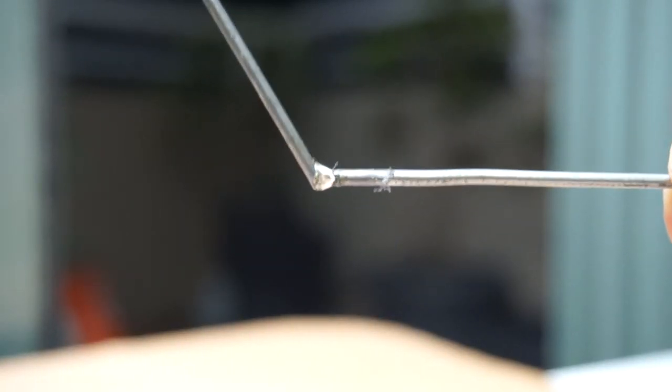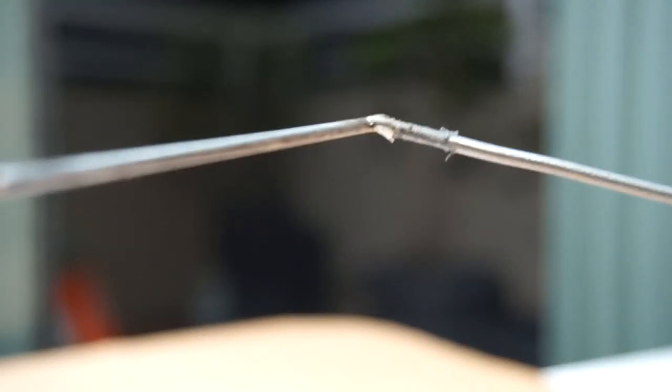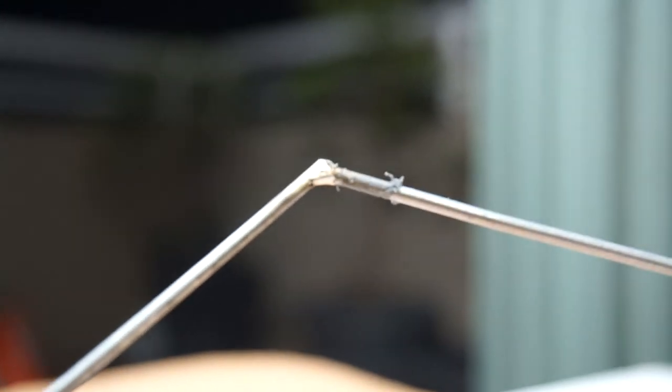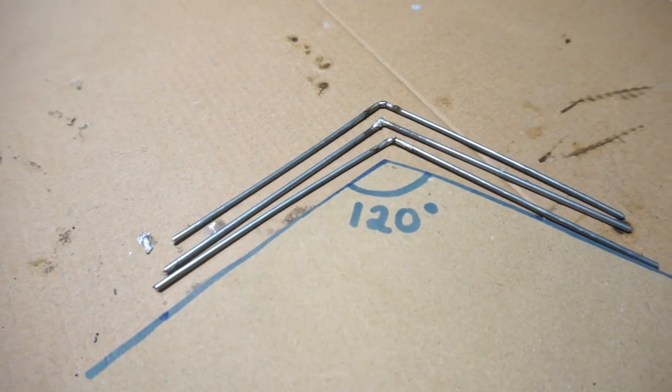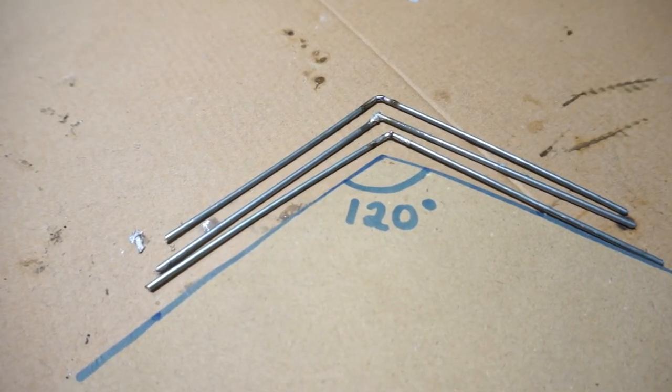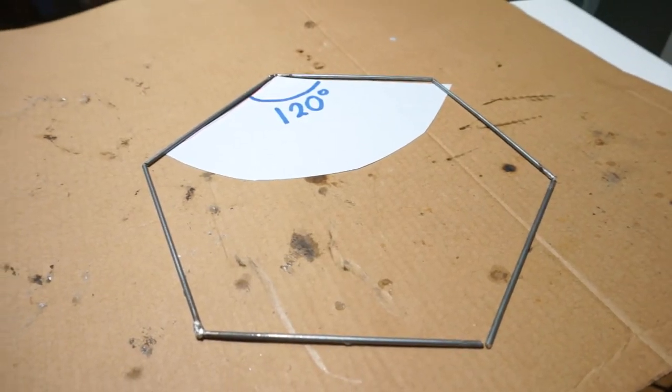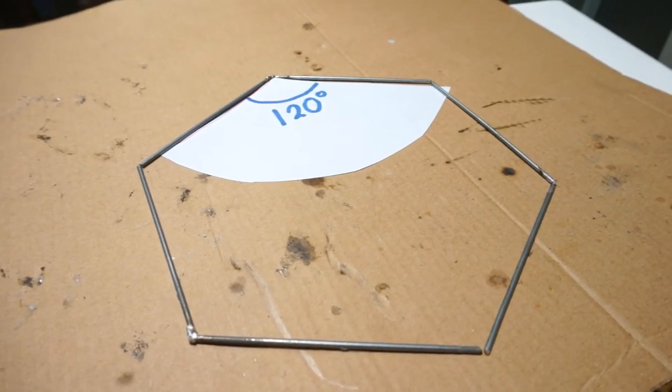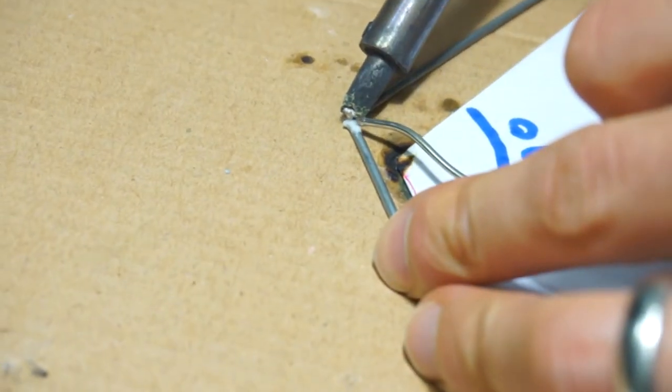I did the same to the rest of the 9cm wires so that I ended up with 3 pairs of wires. If you put them together, they should form a nice hexagon. I soldered the ends together to fix them into place.